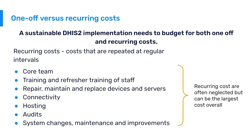Recurring costs are repeated at regular intervals — the bills keep coming again and again. These include core team salaries, annual training and refresher training of staff, costs for repairing, maintaining, and replacing devices and servers (especially important for tracker projects with many devices), connectivity, internet, hosting bills, security audits, and money set aside for system changes and improvements. Recurring costs can often be the largest cost overall in a project.